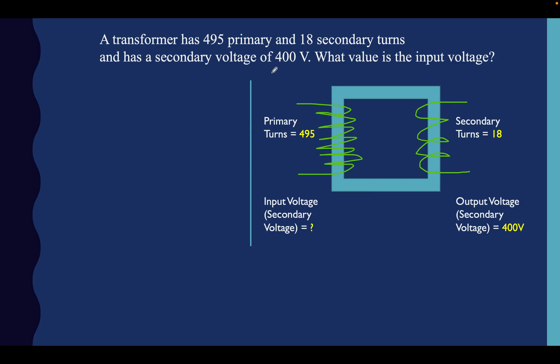Here we can see we've got a question at the top we're going to tackle now, and we can see our transformer on the right hand side here. Bit of a crude drawing, but we know what we're looking at. Let's read the question. A transformer has 495 primary and 18 secondary turns, and has a secondary voltage of 400 volts. What value is the input voltage? That's what we're being asked for, input voltage.